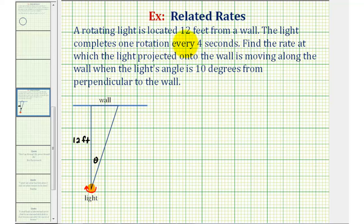Let's start to record the given information. We're told the light completes one rotation every four seconds. This tells us the change in theta with respect to time, which means d theta dt is equal to—well, one rotation is two pi radians, so d theta dt would be two pi radians per four seconds.